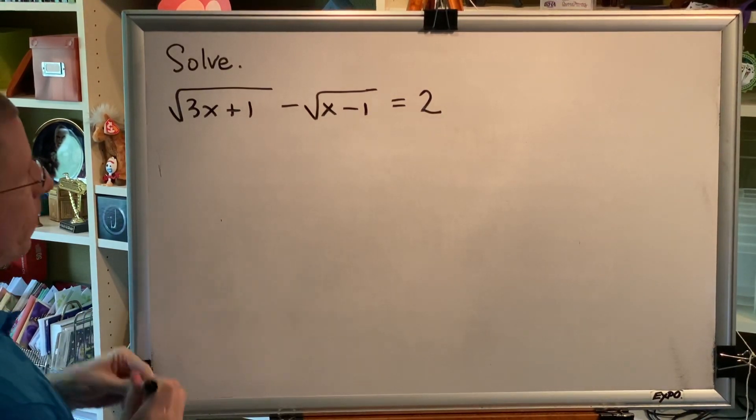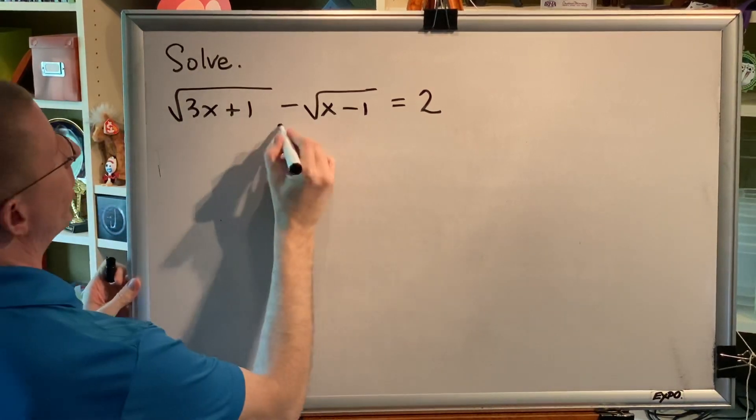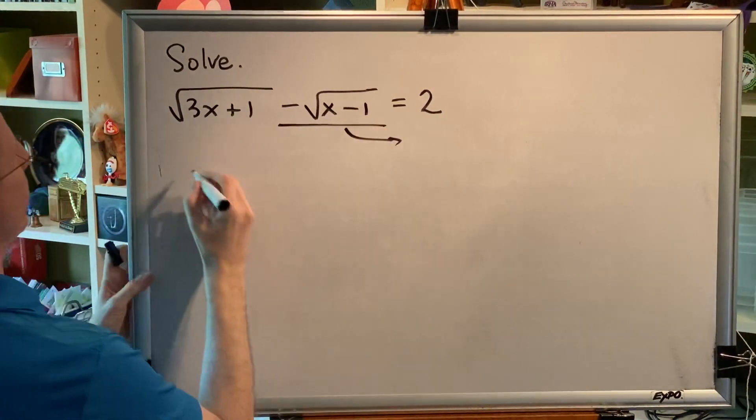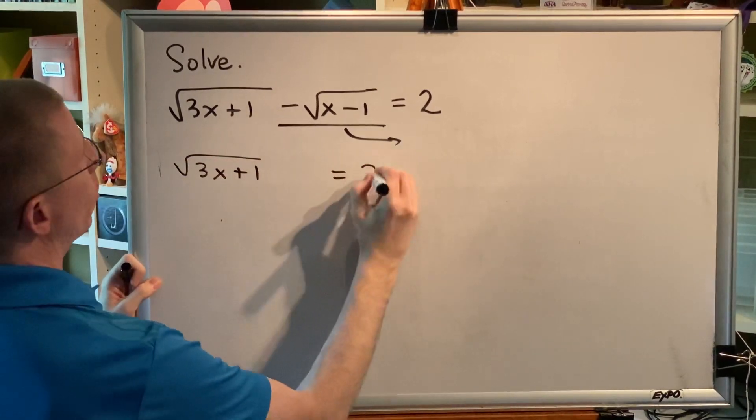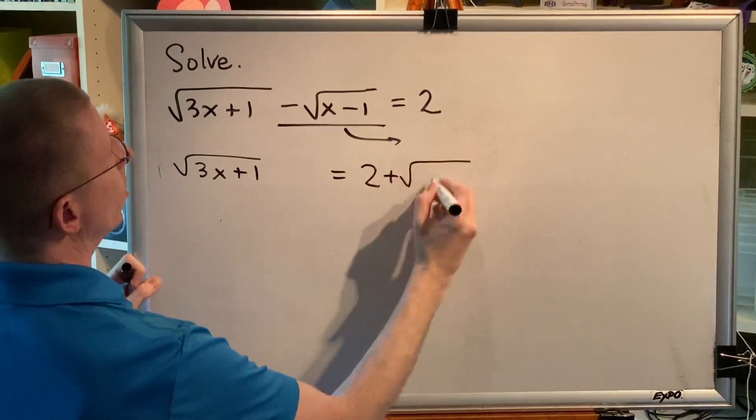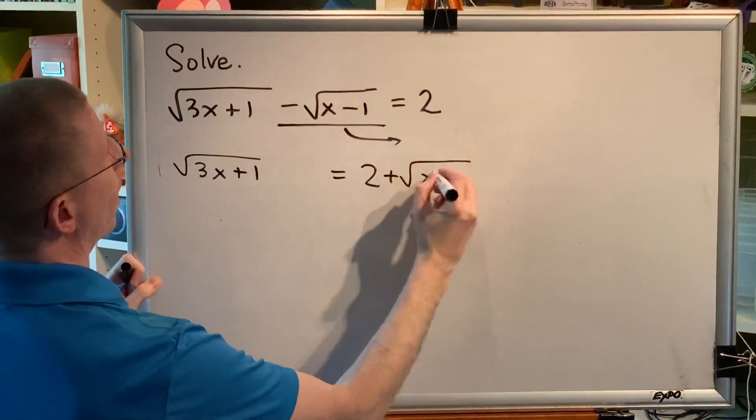So let's go through the steps. First thing I'm going to do is pick up this term and move it to the right-hand side. So I get the principal square root of the sum, 3x plus 1, equals 2 plus the principal square root of the difference, x minus 1.